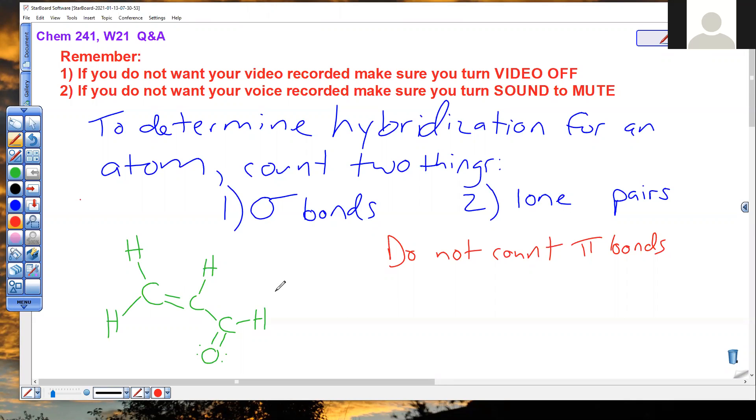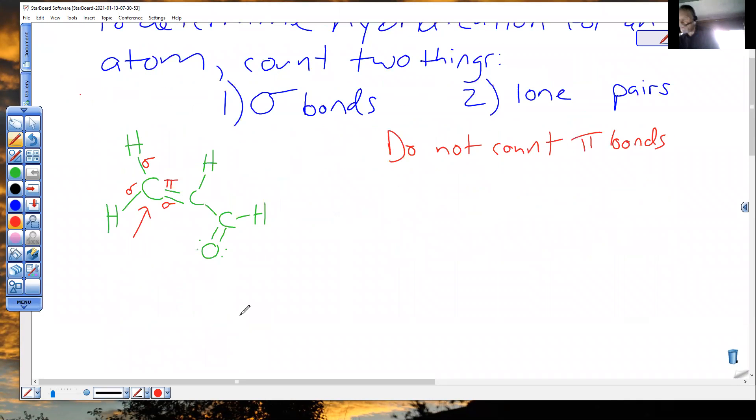So we have here, we'll do this one in red. It has a sigma. I'm talking about the carbon here. Sigma, sigma, sigma. And don't count the pi. So that atom right there has three sigmas and zero lone pairs. Three sigma plus zero LP. LP is short form for lone pairs.